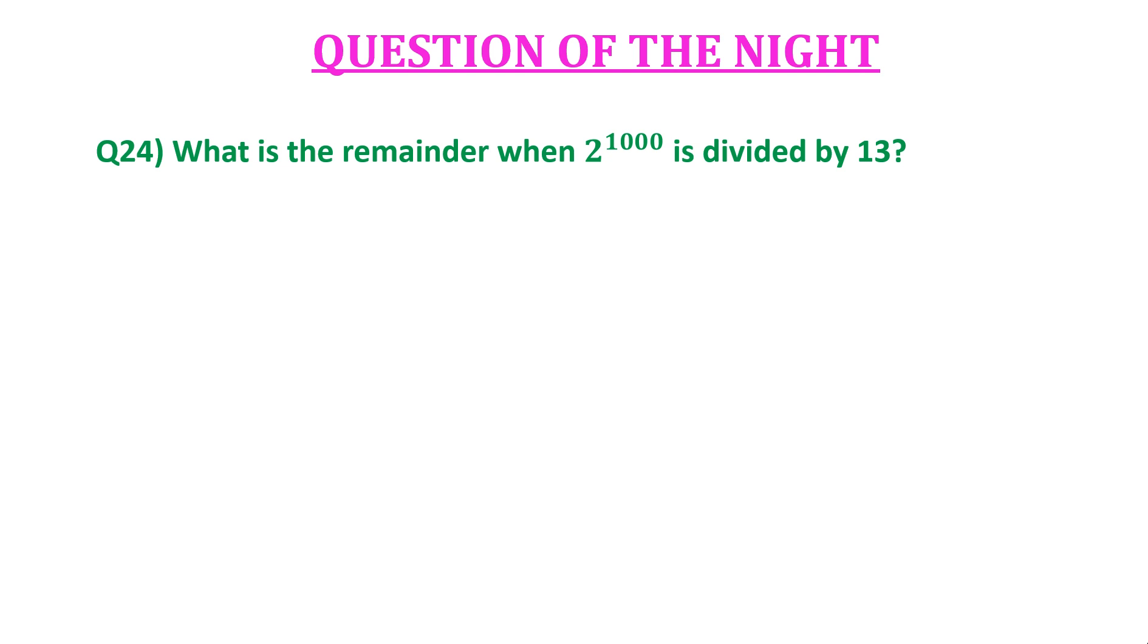The question is, what is the remainder when 2 raised to 1000 is divided by 13? The options are a) 3, b) 4, c) 5, and d) 6.